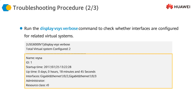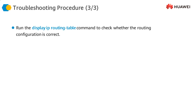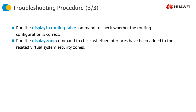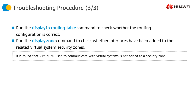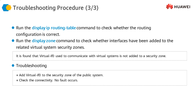Then we look at the display IP routing table and run display zone. When we do that, we find that virtual interface 0 — the interface of the public system used to communicate with the virtual systems — has not been added to a security zone. Because of this, the virtual firewalls cannot communicate with each other. As soon as we add virtual interface 0 to the security zone, the issue is resolved.